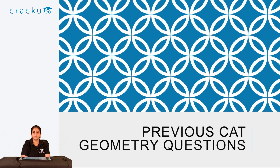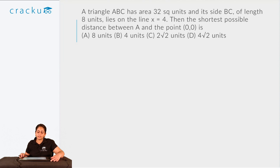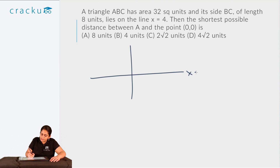Let's take a look at the following question from geometry from CAT 2018. A triangle ABC has area 32 square units and its side BC of length 8 units lies on the line x = 4. Then the shortest possible distance between A and the point (0, 0) is? Let's try to draw this out — here is the x-axis and the y-axis, and this is the line x = 4.